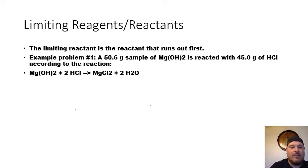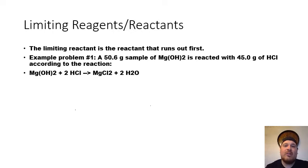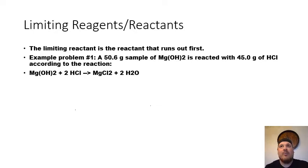So the first thing I'm going to do is read this problem. The reaction they give us is that magnesium hydroxide reacts with two moles of hydrochloric acid and produces one mole of magnesium chloride and two moles of water. The problem tells us we have a 50.6 gram sample of magnesium hydroxide reacted with 45 grams of hydrochloric acid. What I want to know is how much magnesium chloride is going to be produced based off the mass of the two reactants. One of those may be a limiting reactant — one will be in excess. If we calculate using the excess reactant, we'll predict much more than will actually be made, so we need to figure out which is the limiting reactant.